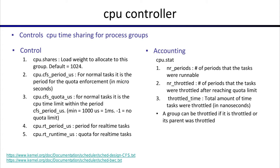On the accounting side, the cpu.stat file shows number of periods, number of throttled, and throttle time — directly related to quota limiting. If there is a quota limit and you become throttled, it shows how many periods you ran and were throttled. Throttling means you were runnable and wanted to run but were not allowed because you reached your quota.